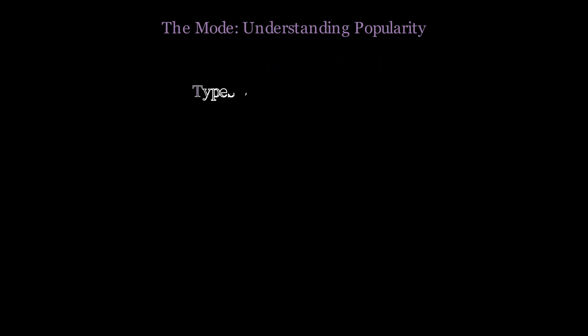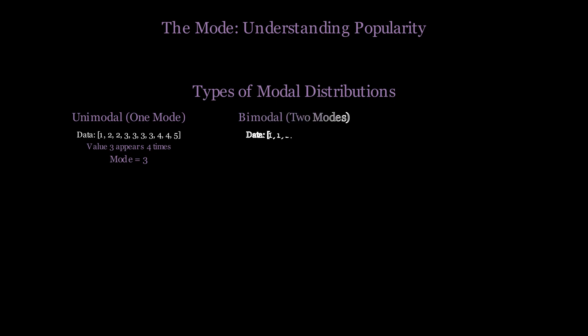The mode is unique because data sets can have different modal characteristics. Unimodal data has one clear winner—in this case, the value 3 appears 4 times, making it our single mode. Bimodal data has two equally popular values—here, both 1 and 5 appear 3 times each. This might indicate two distinct groups or preferences in your population. Sometimes there's no mode at all, when all values appear with equal frequency, indicating no clear favorite or a uniform distribution of responses.